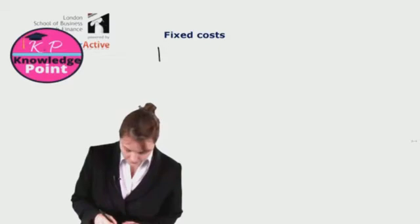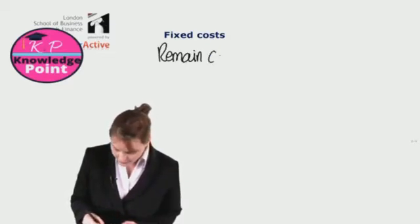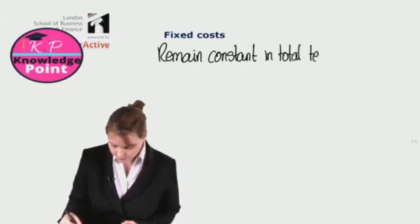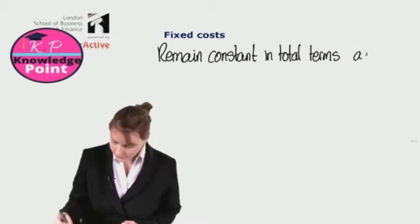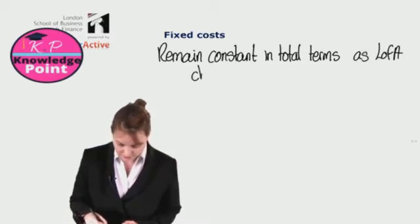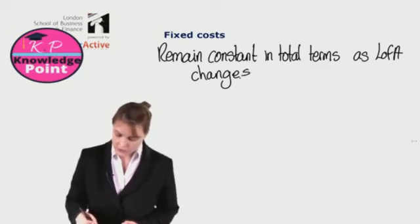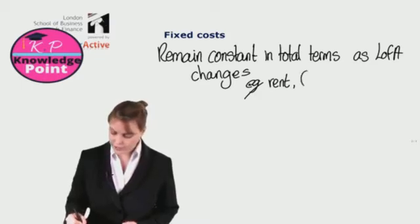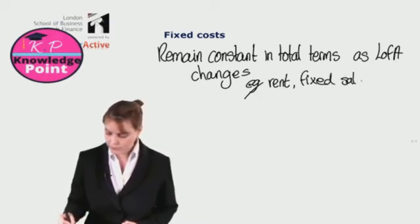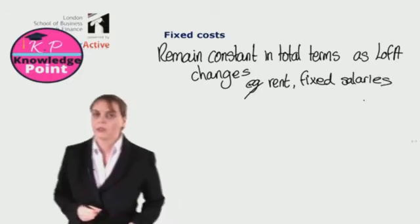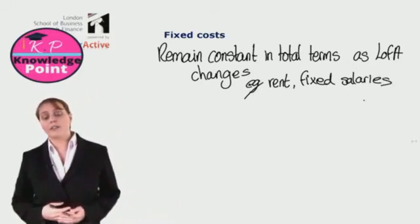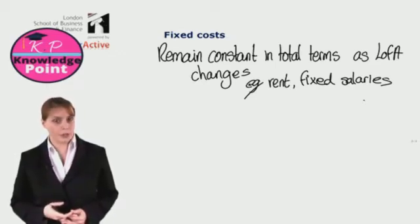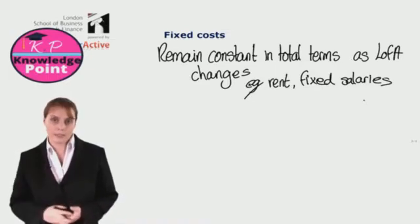Our landlord doesn't care how many units we've produced — they expect to get paid the rental amount no matter what our level of activity is. So to note this down: fixed costs remain constant in total terms as level of activity changes. Examples include rent, and also fixed salaries. If our factory supervisor is on a fixed annual salary, then regardless of how many units we produce, we are going to have to pay them their salary.